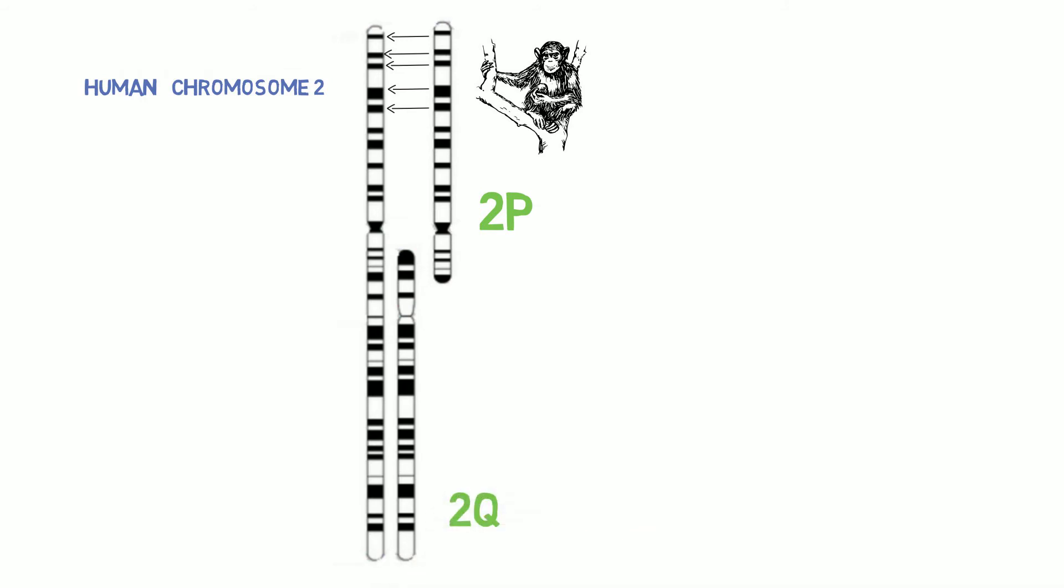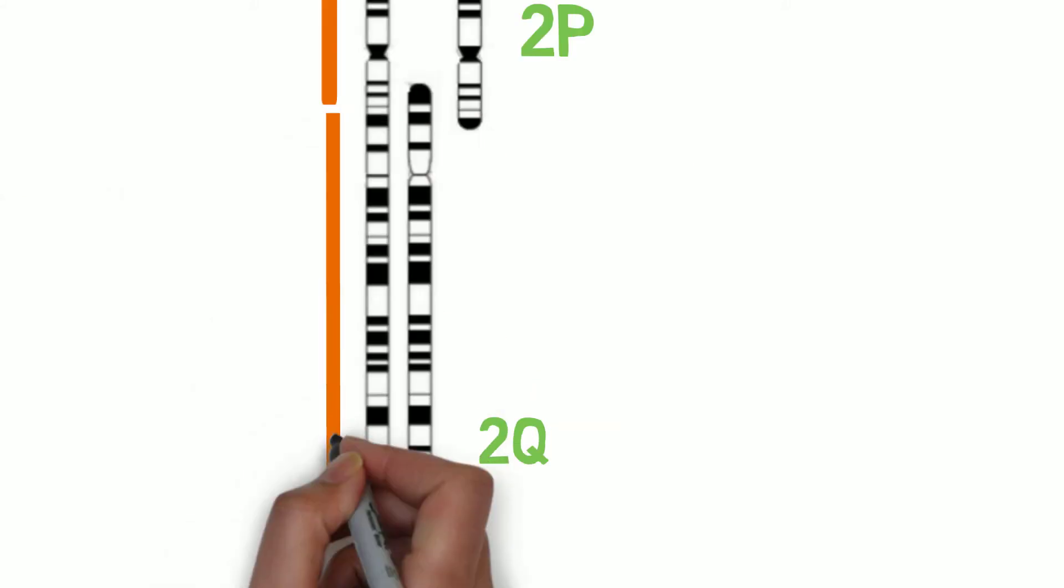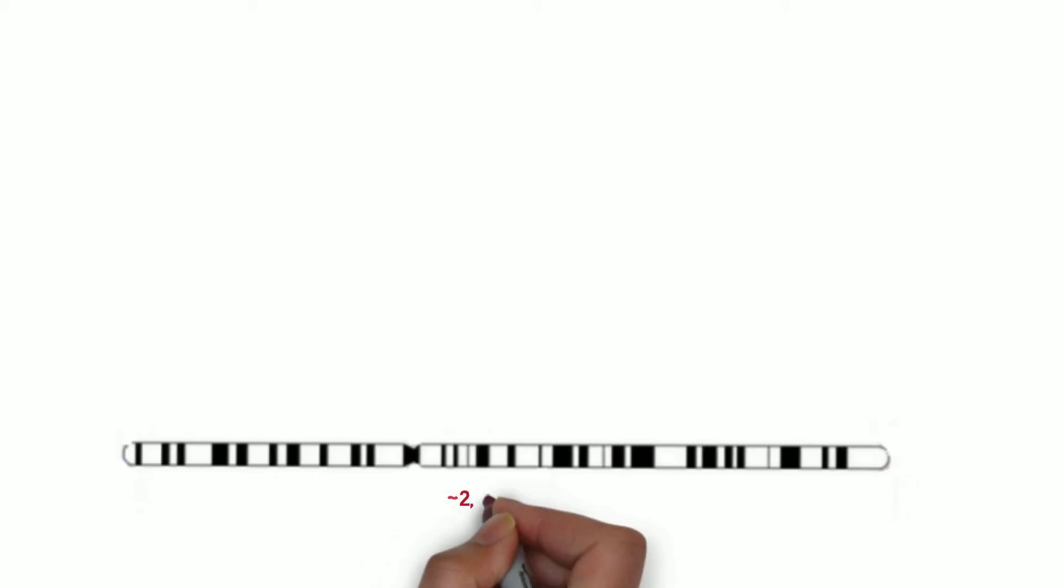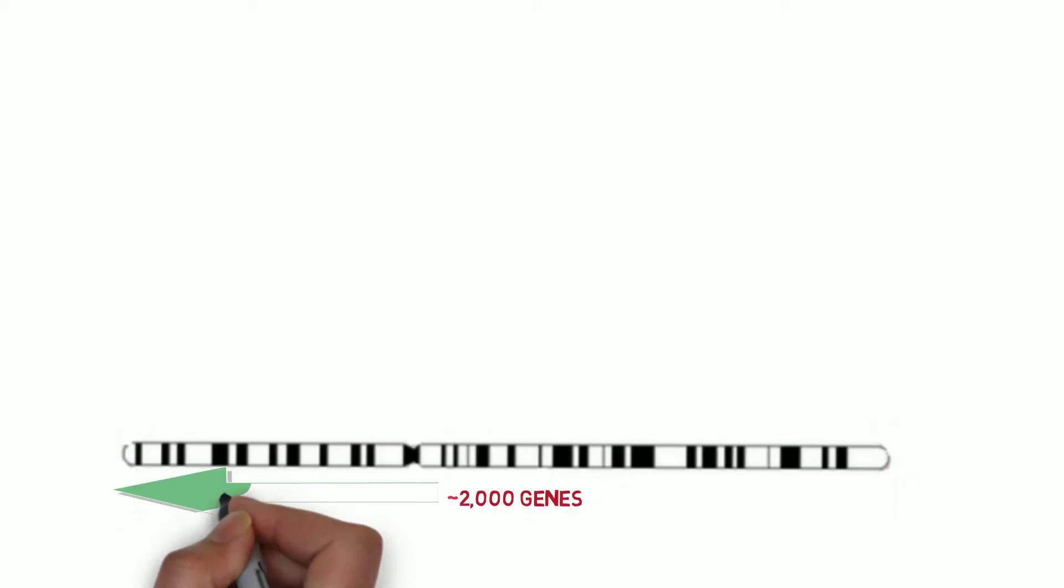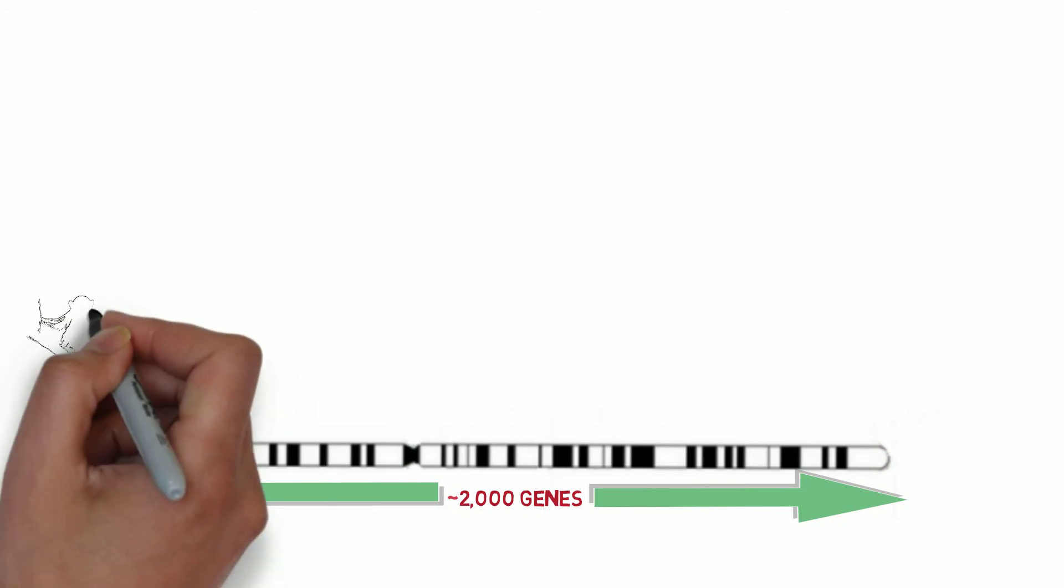When you analyze the DNA code, or DNA sequence, you find that it is almost exactly the same in chimpanzee 2P as it is in one half of our chromosome two. By the same token, when you analyze chimpanzee chromosome 2Q, it has almost exactly the same DNA sequence as what we find in the other half of our chromosome two. So when you line them up, this is what you see. So each of that set of about 2,000 genes is on one contiguous chromosome for us humans, but on two smaller chromosomes in chimpanzees.